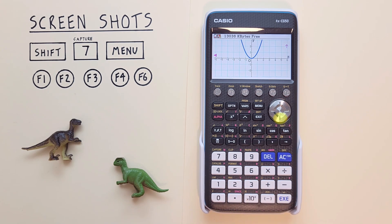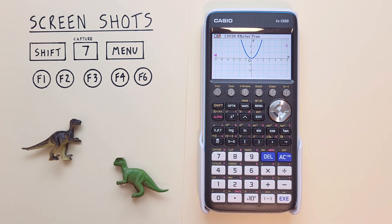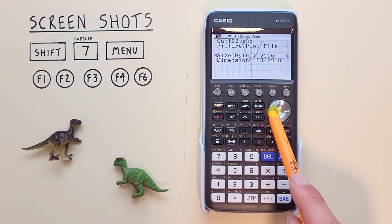And if we scroll down, we can see our second screenshot. There's that graph. We can go back to the menu with the left key.